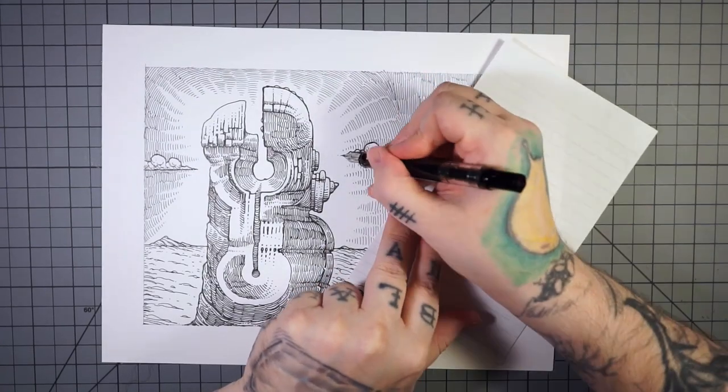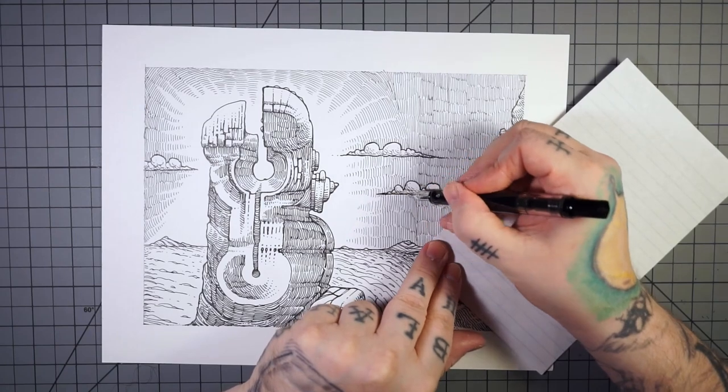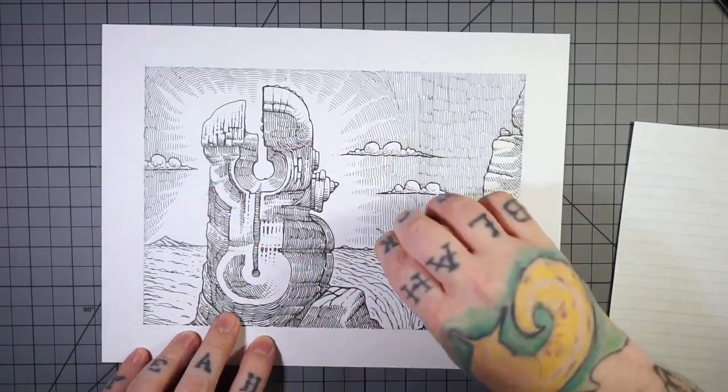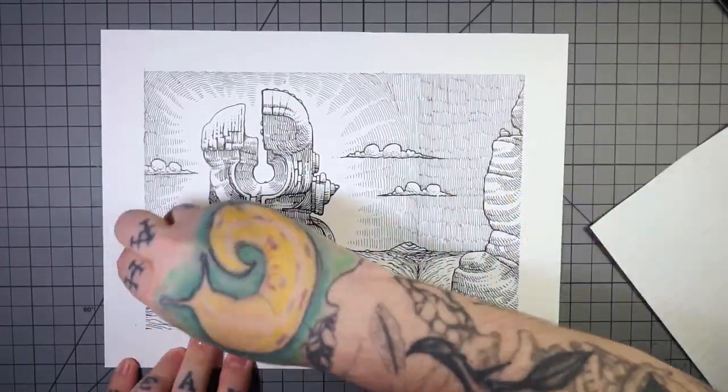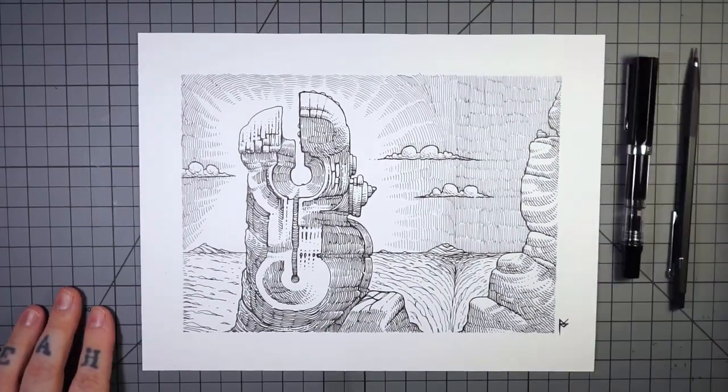Adding a little texture to the clouds there. Then I came back through with this thicker fountain pen and made them stand out a little bit more. And then you sign it, erase any little pencil lines showing up, and yeah, that's that.